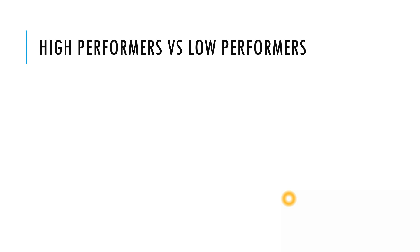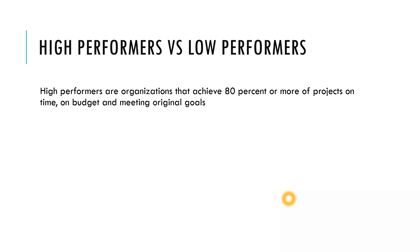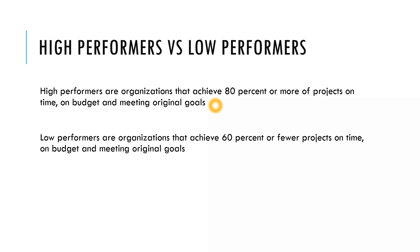To understand the graph listing these factors, it's important to know what high performers are. That yellow circle was my mouse pointer. High performers are organizations that achieve 80% or more of projects on time, on budget, and meeting original goals. If an organization has a success rate of 80% or more, it is considered a high performing organization as defined in this report.